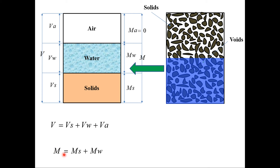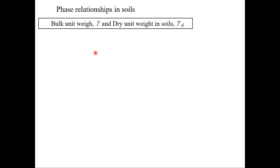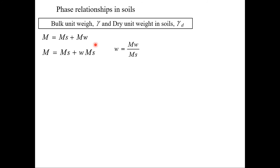The first relationship in soils is the mass relationship, which relates bulk unit weight and dry unit weight. Bulk unit weight is given by the weight of wet soil divided by total volume, and dry unit weight is the unit weight of dry soil. Total mass is mass of solids plus mass of water, but mass of water can be expressed in terms of water content. Water content is defined as mass of water divided by mass of solids.